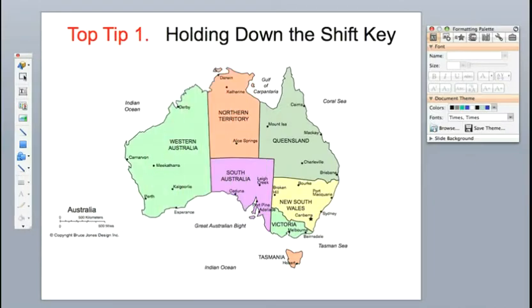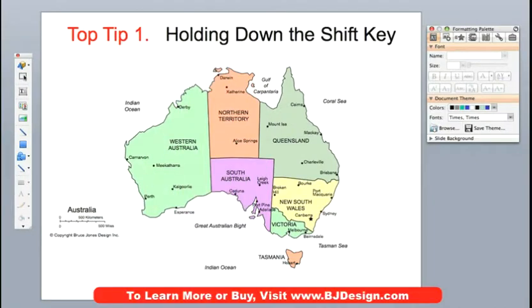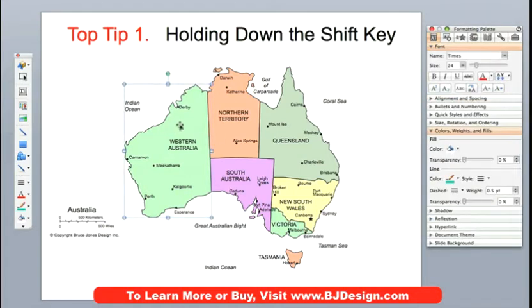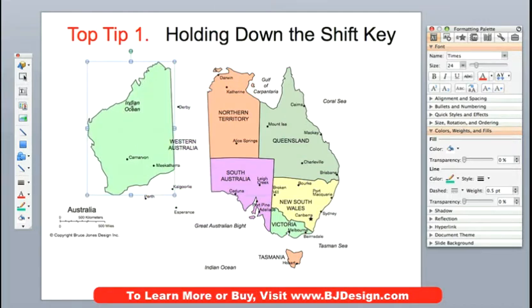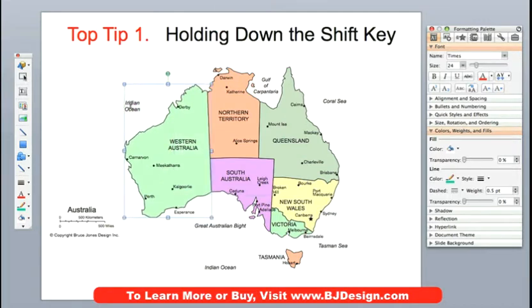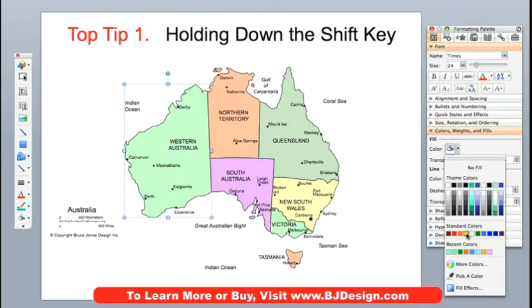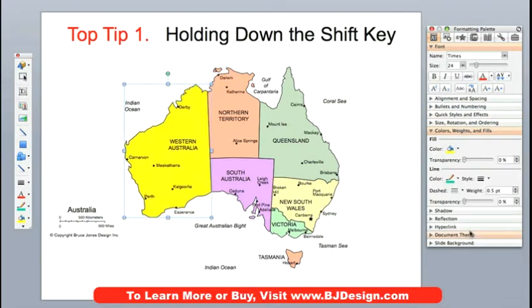We're going to be working today with one of our editable Australia maps. What editable means is that each element in our maps is a separate object. They can be highlighted with the little handles, pulled out, we can go into our formatting palette, and we can change colors to anything that we want. So it's a fully editable map — text and land.